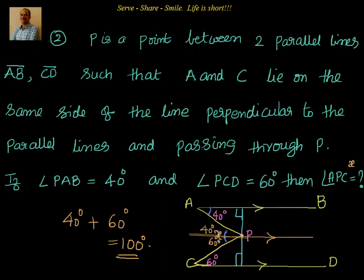So what we have been given: P is a point between two parallel lines AB and CD such that A and C lie on the same side of a line perpendicular to the parallel lines and passing through P. We draw another line through P parallel to AB and CD. By alternate interior angles, angle APY equals 40 degrees and angle CPY equals 60 degrees.